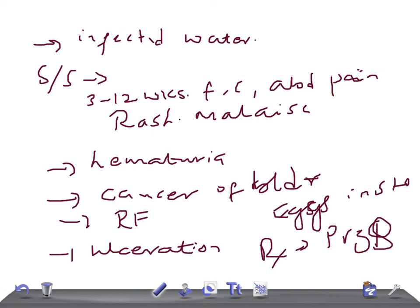So schistosomiasis is caused by trematodes. There are different types: the bladder one, the liver one, the mesenteric vessel one. This is a brief video on schistosomiasis for USMLE and MRCPCH students. Thank you so much for watching this video, take care.